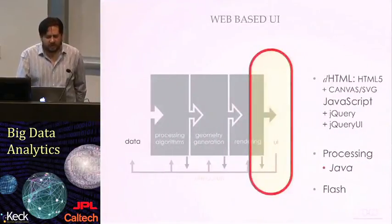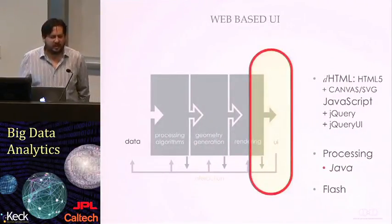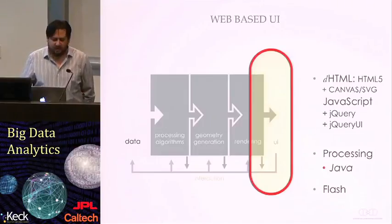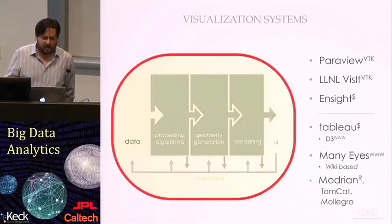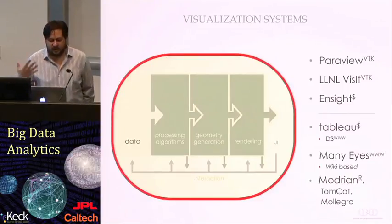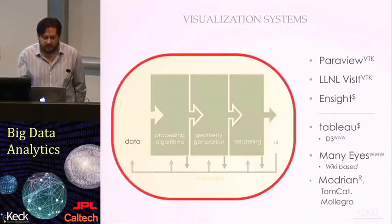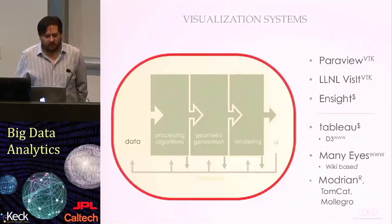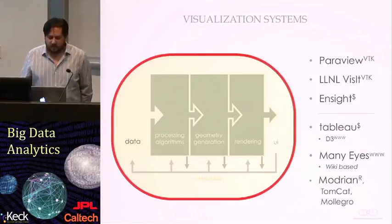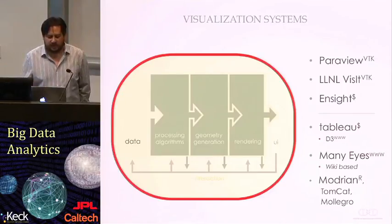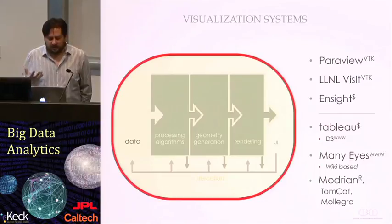Now that we talked about user interfaces, we can talk about things that put everything together—everything from data creation, data ingestion, processing algorithms, geometric generation, rendering it on the screen, and giving your user interface at the end of it. This is what we call a visualization system. In the world of scientific visualization, we first have ParaView. ParaView is a system that was developed at the national labs with the underlying toolkit, which is VTK.